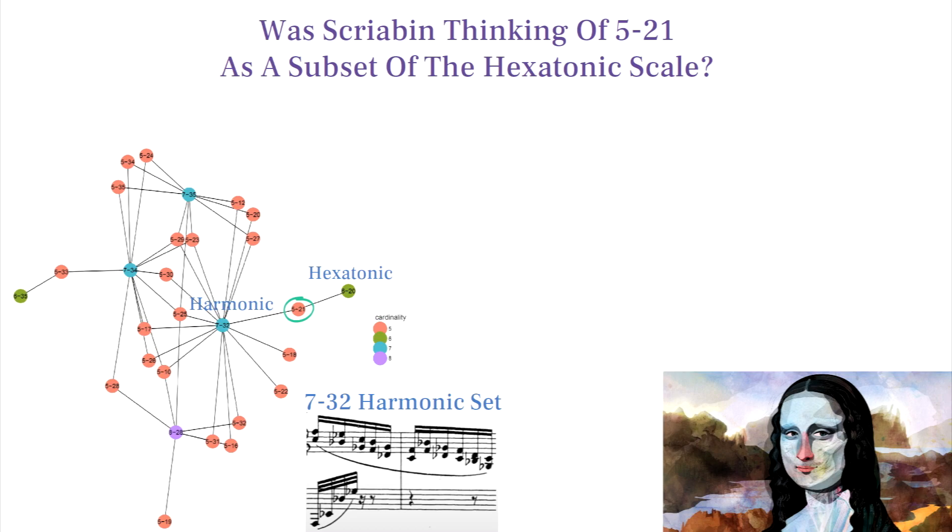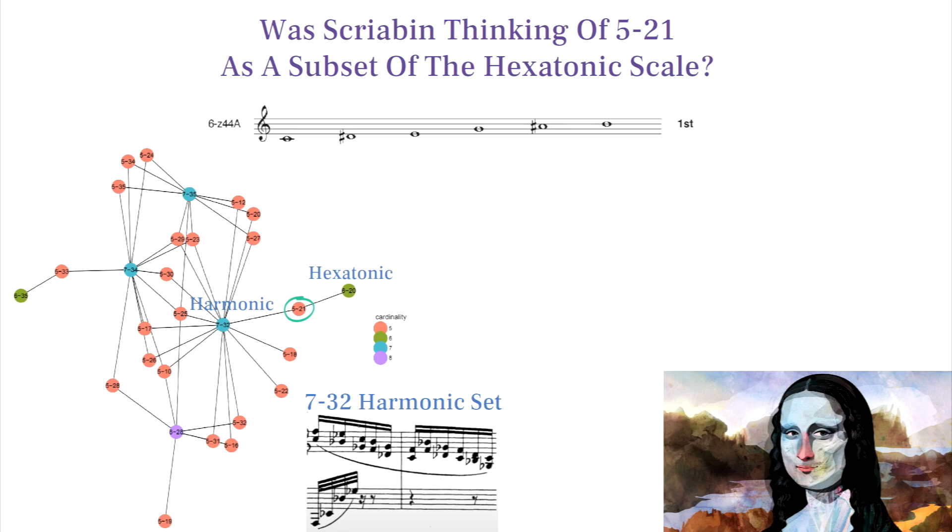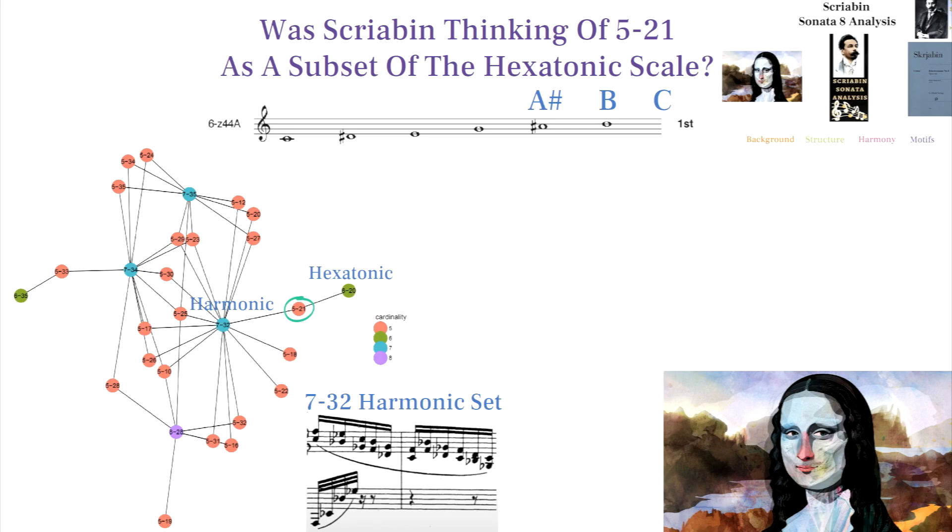This 521 set is used as a subset of 6E44, a set outside of the pressing scales containing a cluster of two consecutive semitones. I explained this set in more depth in my video analyzing Scriabin's eighth sonata.